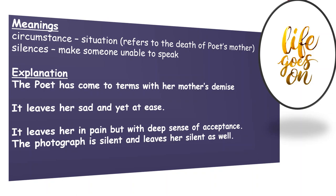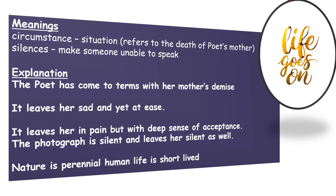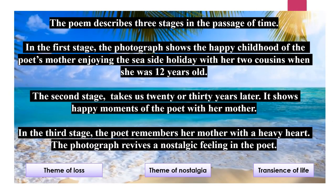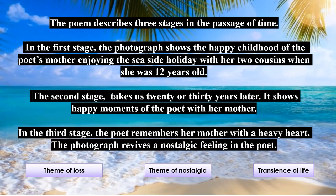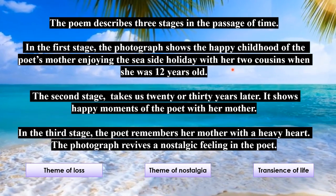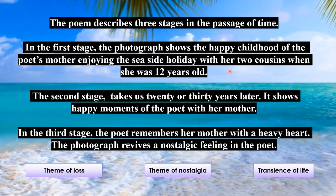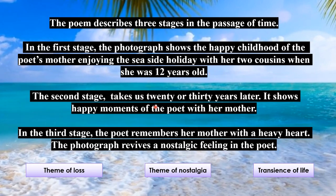If you observe carefully, there is a thematic relation between the previous lesson 'A Portrait of a Lady' and this poem, with common themes such as loss, acceptance, and the transience of life. This poem describes three stages in the passage of time: in the first stage, the photograph shows the happy childhood of the poet's mother enjoying a seaside holiday with two cousins at age twelve. The second stage takes us twenty to thirty years later, showing happy moments of the poet with her mother. In the third stage, the poet remembers her mother with a heavy heart — the photograph revives a nostalgic feeling in the poet.